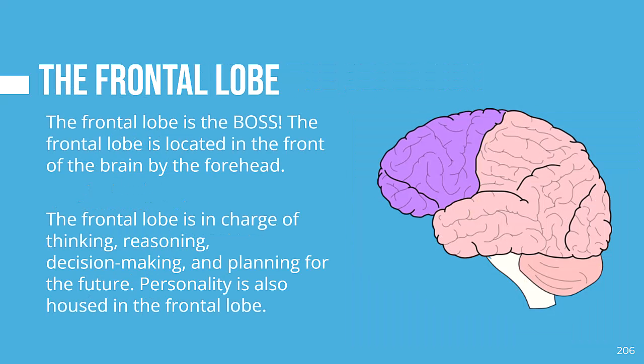The frontal lobe is the boss of the brain. Located in the front of the brain by the forehead, the frontal lobe is in charge of thinking, reasoning, decision making, and planning for the future. Personality is also housed in the frontal lobe. Since the frontal lobe is so complex, it takes a long time to fully develop — in fact, it is the last part of the brain to finish developing. A person's frontal lobe isn't fully developed until they are at least 25 to 30 years old.